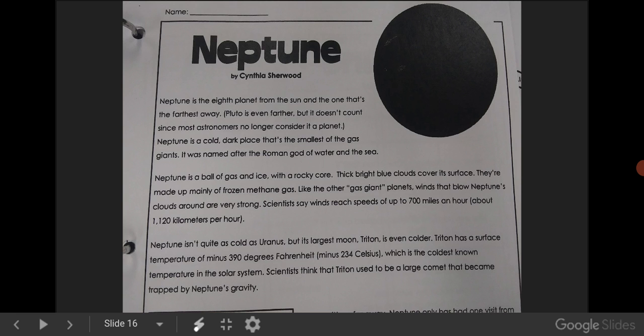Neptune isn't quite as cold as Uranus, but its largest moon, Triton, is even colder. Triton has a surface temperature of minus 390 degrees Fahrenheit, which is the coldest known temperature in the solar system. Scientists think that Triton used to be a large comet that became trapped in Neptune's gravity.